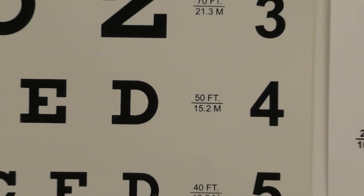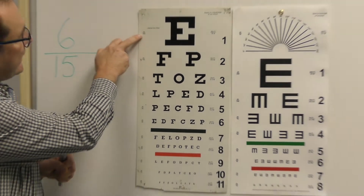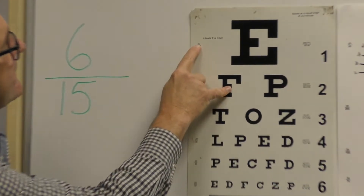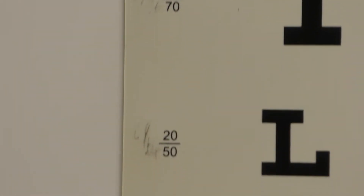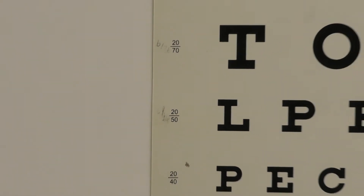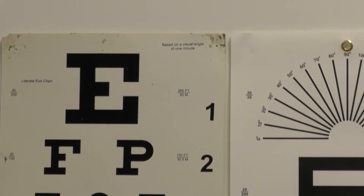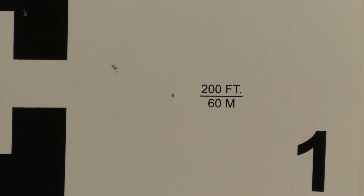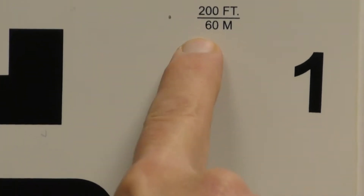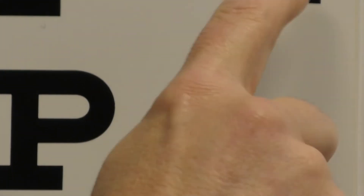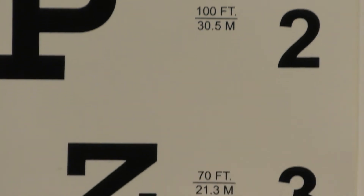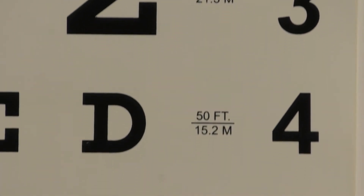On the left-hand side of the chart you can see two sets of numbers. The top numbers — 20/200, 20/100, 20/70 — are in feet and we do not use these. The bottom numbers are in meters: 60, 30, 21, 15, 12. These are what we use in the interpretation of visual acuity.